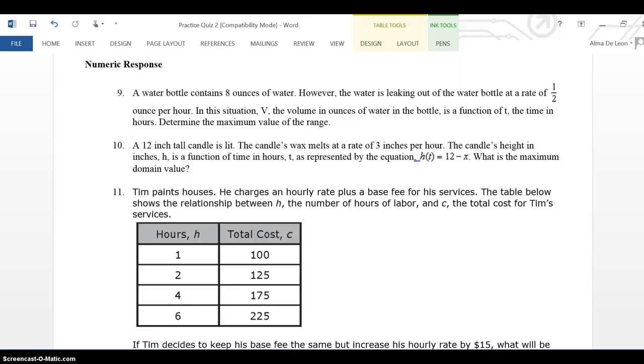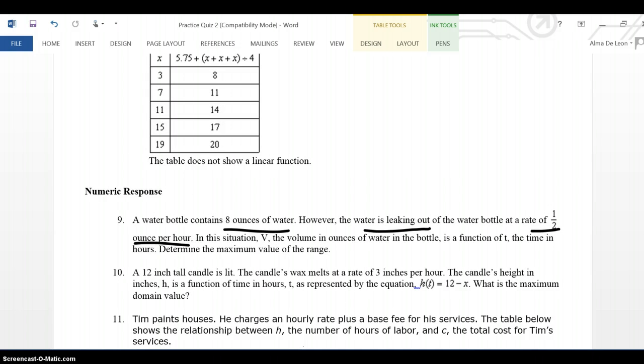Determine the maximum value for the range. So we're looking at a water bottle at a rate of 1.5 ounce per hour. That is our slope. Our slope is 1.5, and our slope always goes in front of x, so I'm going to say 1.5 x.